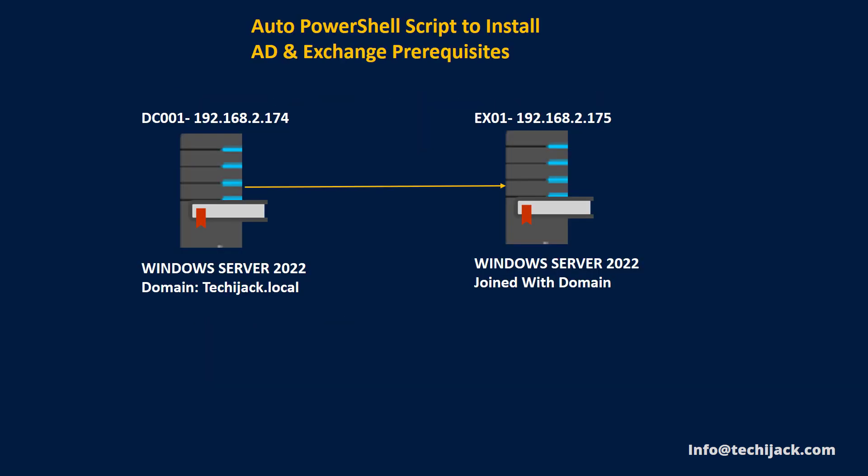Let's see our scenario. I have two servers: one is DC001, which is our domain controller with IP 192.168.2.174, and Windows Server 2022 is installed on it. The domain is techiejack.local. The other server is EX01 with IP 192.168.2.175, also running Windows Server 2022 and joined to the domain techiejack.local.